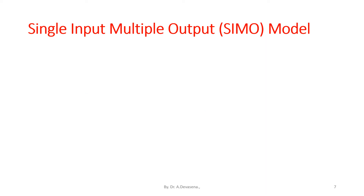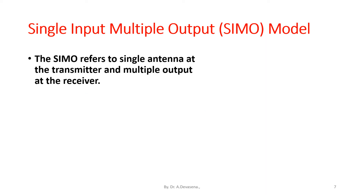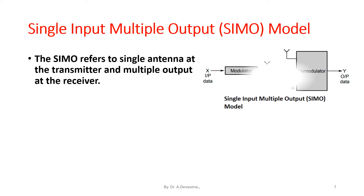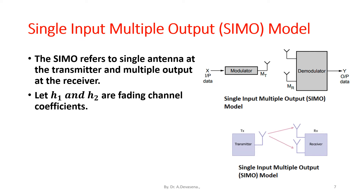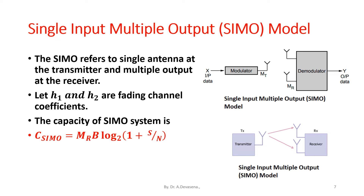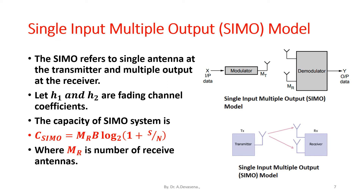Single input multiple output model: SIMO refers to a single antenna at the transmitter and multiple antennas at the receiver. H1 and H2 are fading channel coefficients. The capacity of the SIMO system is: C_SIMO = M_R × B × log₂(1 + S/N), where M_R is the number of receive antennas, B is the bandwidth, and S/N is the signal to noise ratio.